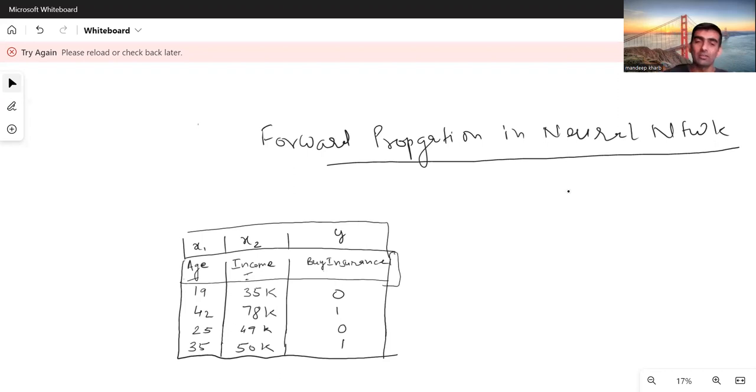This is my historical data. For example, for the age of 19 years with an income of 35,000, users do not buy insurance. For the age of 42 with an income of 78,000, user buys insurance. Zero represents no and one represents yes.